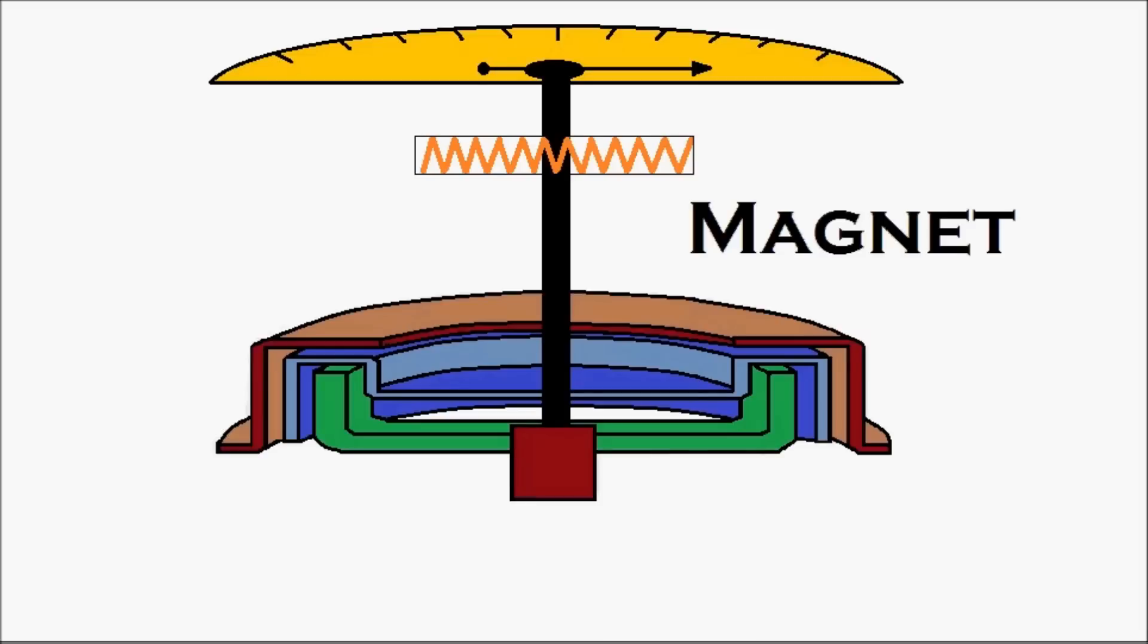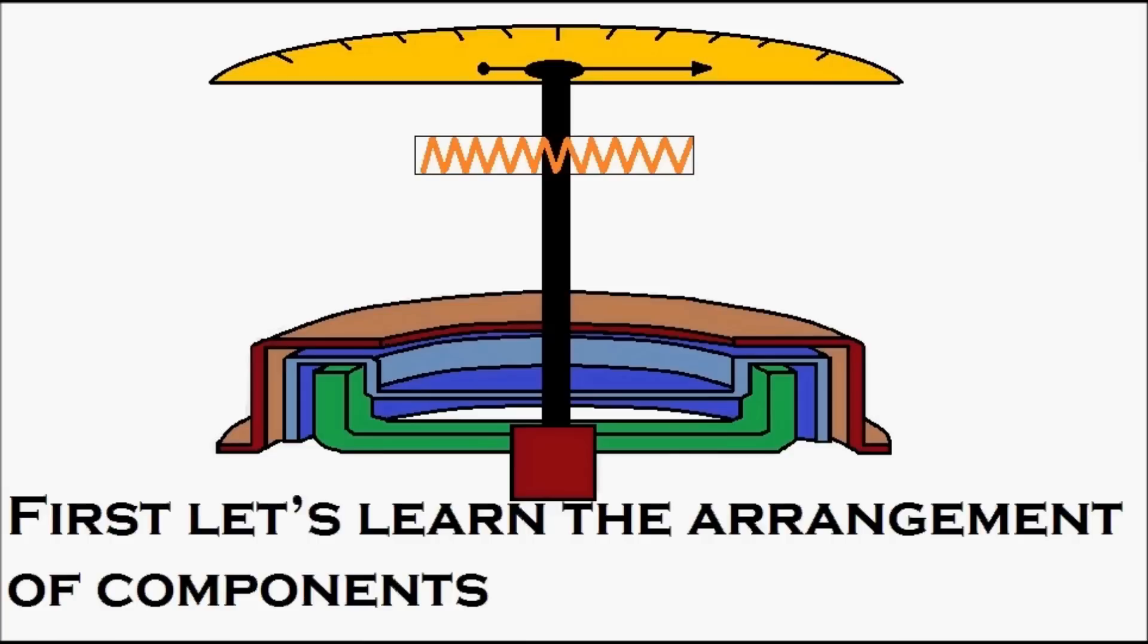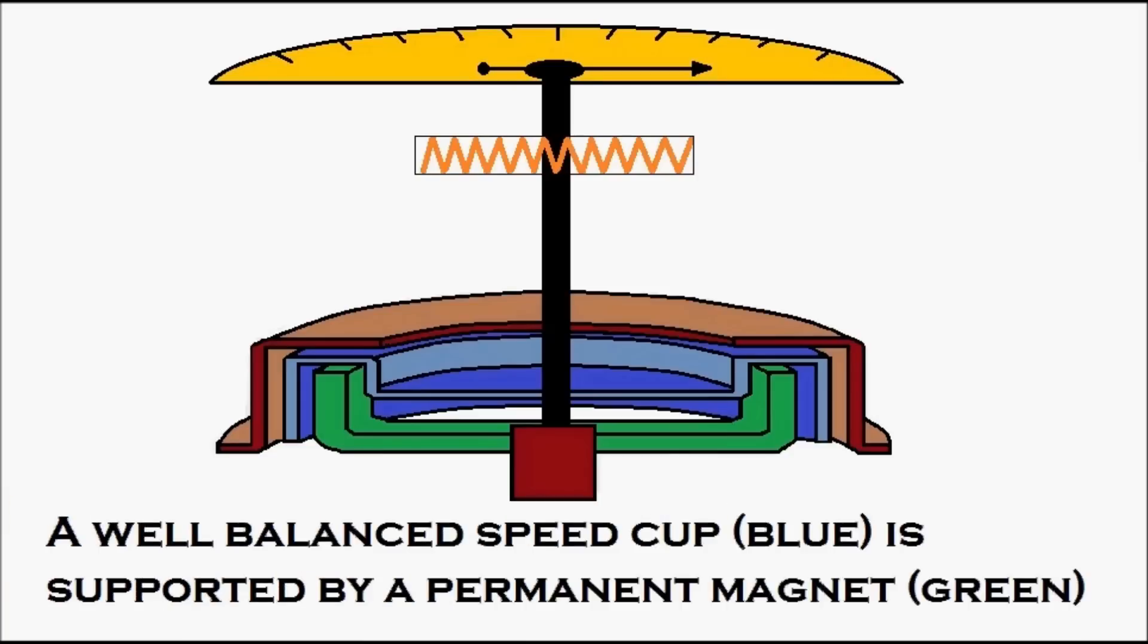First, let's learn the arrangement of components. A well-balanced speed cup, which is in blue, is supported by a permanent magnet, which is in green, as you can see in the video.